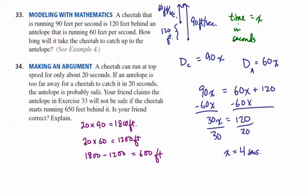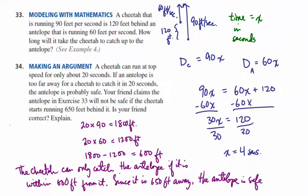And what that means is that if the antelope is within 600 feet of the cheetah when it starts, then the cheetah will be able to catch up to it. So your friend here is incorrect. And so the cheetah will only be able to catch the antelope if it's within 600 feet from it. But since the antelope is 650 feet away, the antelope should be safe. So this is another motion example. We'll see if we can fit another problem on here.